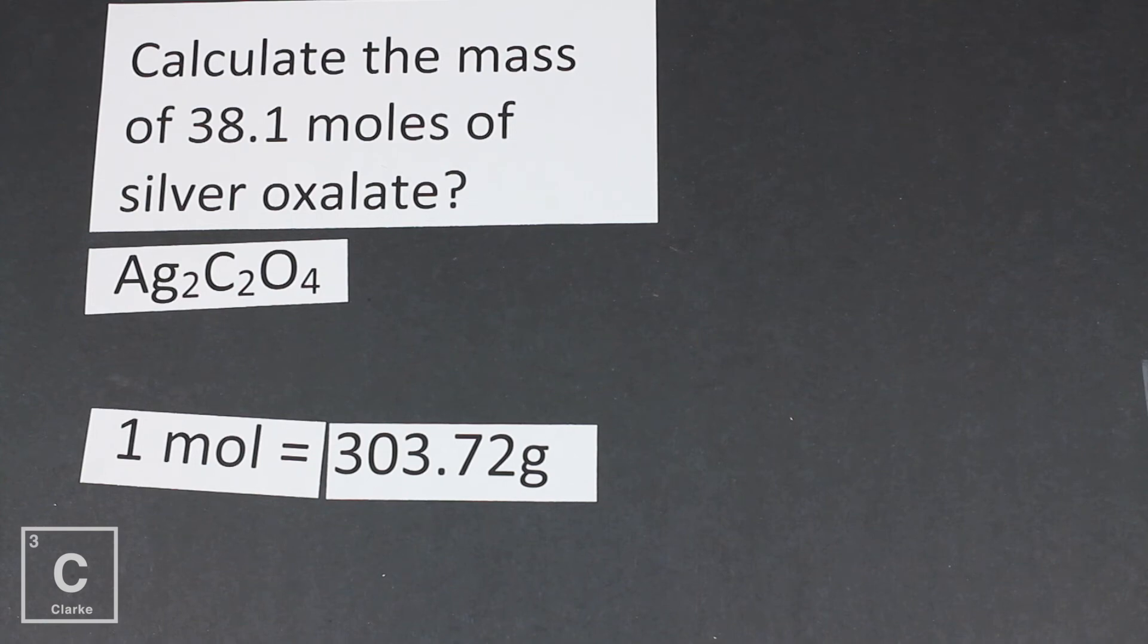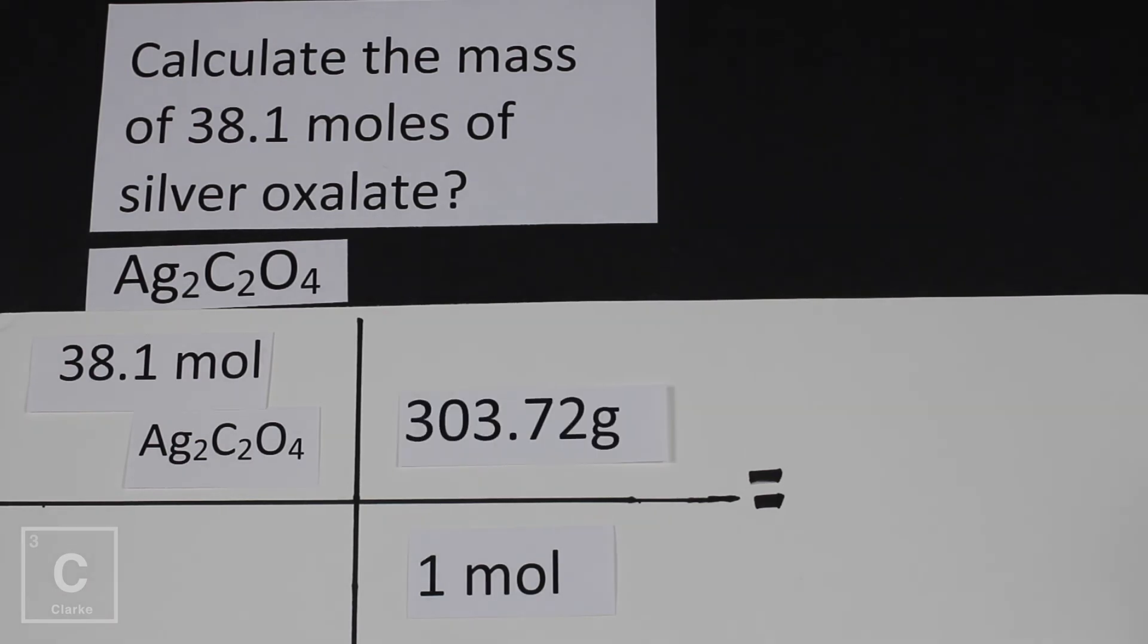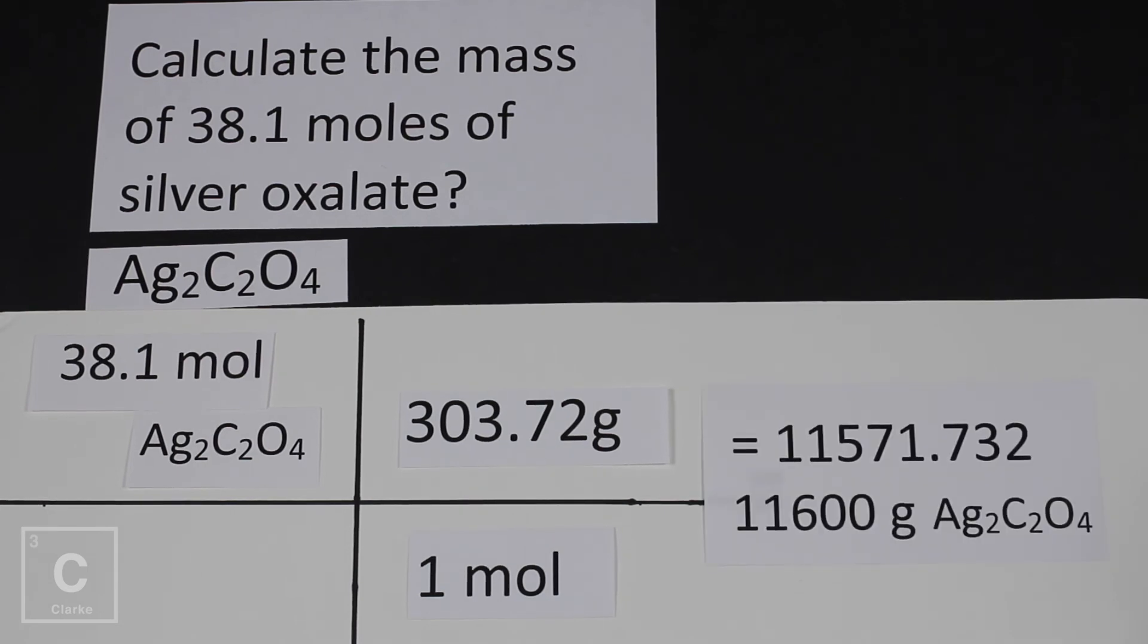So one mole of silver oxalate equals 303.72 grams. Let's use that in our problem. We've got to place that given. We've got 38.1 moles of silver oxalate. Again, moles is on top. Moles has got to go on bottom. We've got an empty space. That's for our molar mass. Plus it says calculate the mass. That means mass has got to go on top. So that molar mass we just calculated, let's put it right there. Both of our numbers are on top because remember, we're ignoring that one. So 38.1 times 303.72. And you see that big long number that I got in the calculator? 11,571.732. I've got three sig figs. One, two, three. So I've got to round that to three sig figs. So that's where the 11,600 grams are coming from.